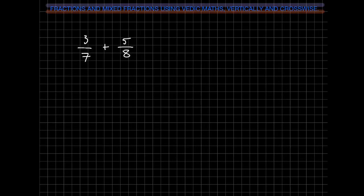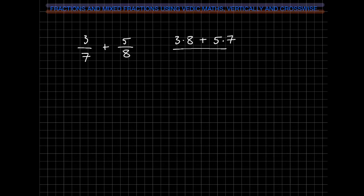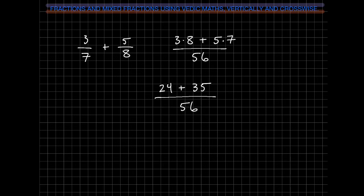Now if the denominators are not similar — in this case 7 and 8 — we're going to use vertically and crosswise from our Vedic Maths formula. We multiply 3 times 8, then add 5 times 7 for our numerator: 3 times 8 plus 5 times 7. Our denominator, we simply multiply straight across: 7 times 8 is 56. So 3 times 8 gives us 24, plus 5 times 7 is 35, over 56. 24 and 35 gives us 59, so our answer is 59 over 56.